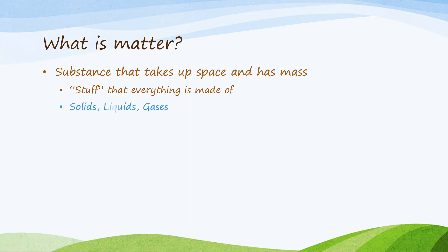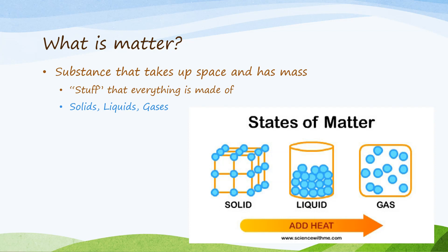Here's an image of the states of matter and how, if you add heat or energy to them, they can change into the other states. Matter is made of tiny particles that we can't individually see with our eyes — we would need a very powerful microscope. These particles have names.